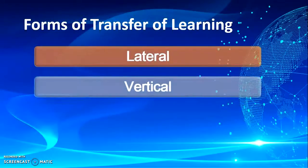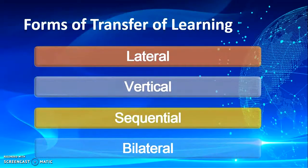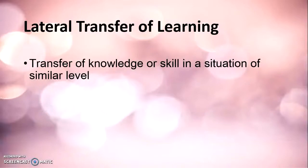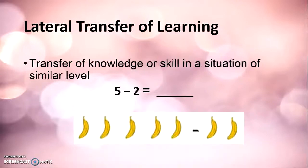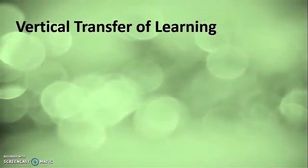There are four common forms of transfer of learning: lateral, vertical, sequential, and bilateral. Lateral transfer of learning means the transfer of knowledge or skill from one situation to another situation of similar level. For example, if a student is taught that 5 minus 2 equals 3 in class and at home the mother asks how many bananas remain after eating 2 from 5, and the student correctly answers 3, that is lateral transfer of learning taking place.